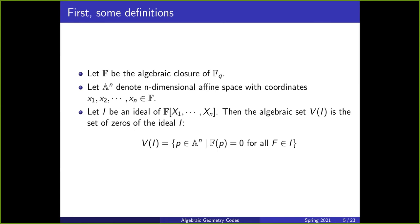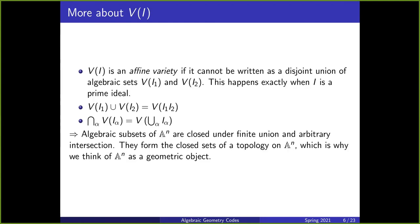Let A^n be an n-dimensional affine space with coordinates x1 to xn in F. Now let I be an ideal of the polynomial ring of n variables over F. Then the algebraic set V of I is the set of zeros of the ideal I. We see that V of I is an affine variety if we can't write it as a disjoint union of algebraic sets V of I1 and V of I2, and V of I is an affine variety exactly when I is a prime ideal.